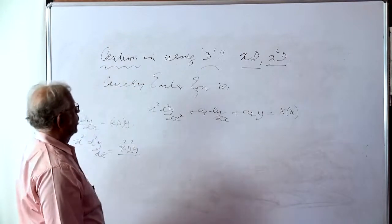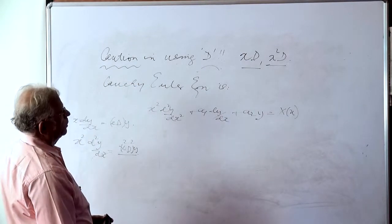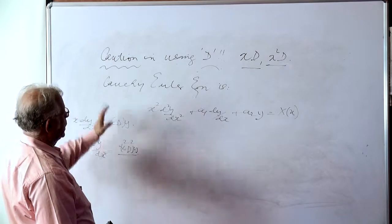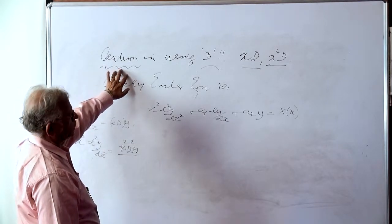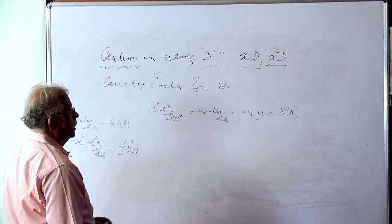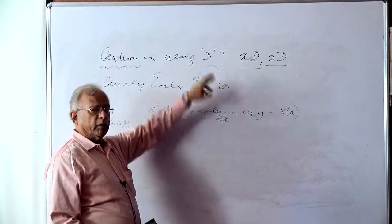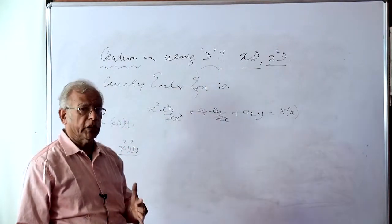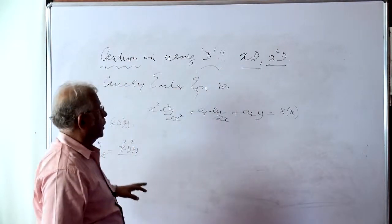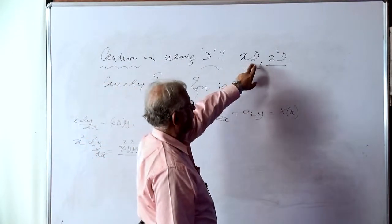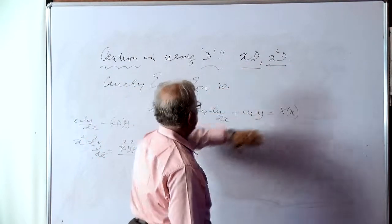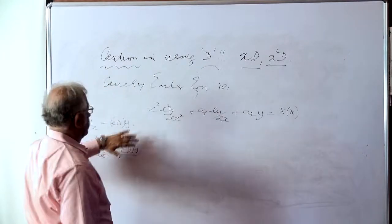We've put something up already on the board. That means we have said that there is a bit of caution to be exercised in using the operator d. Sometimes it follows laws of algebra, sometimes it does not. Particularly, when we talk in terms of xd and x squared d, it's like this. For example,